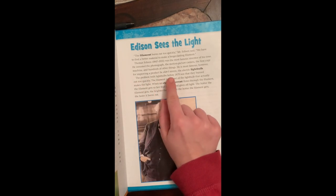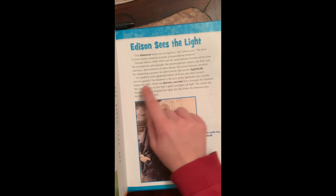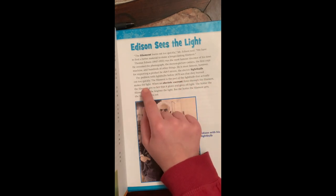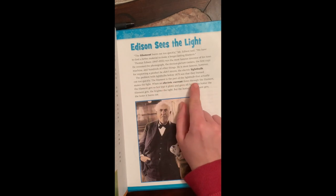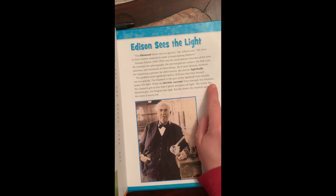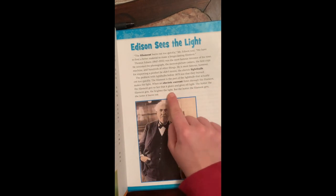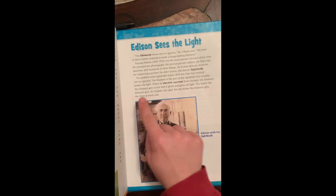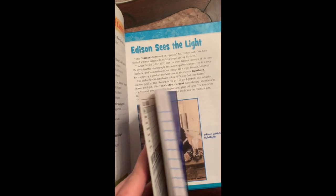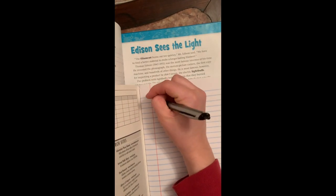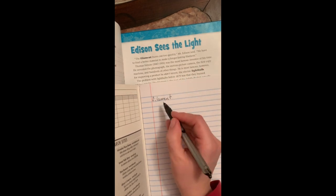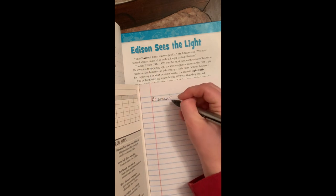The problem with light bulbs before 1879 was that they burned out too quickly. The filament is the part of the light bulb that actually makes the light. When an electric current flows through the filament, the filament gets so hot that it glows and gives off light. The hotter the filament gets, the brighter the light. But the hotter the filament gets, the faster it burns out. All right, before I move on to my next page, I'm going to write down those new vocabulary words.